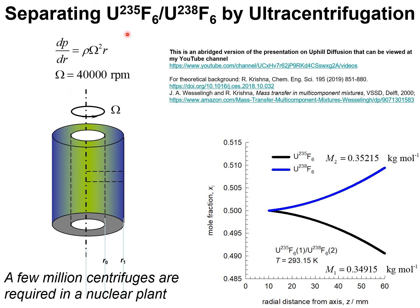The separation of the isotopes of uranium U235 and U238 by applying centrifugal force is another example of the exploitation of uphill diffusion. In practice, rotational speeds of 40,000 rpm are applied to create a pressure gradient that is described by this equation.